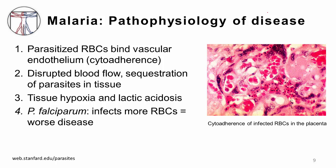We'll talk a little bit about the pathophysiology of disease — why do people get sick with malaria? These parasitized red blood cells become abnormal, sticky red blood cells, and they'll bind to the vascular endothelium inside blood vessels. This process called cytoadherence happens, and when you get binding of all these red blood cells in the blood vessels, you get disruption of normal blood flow and sequestration of these organisms in tissues such as the brain, the kidney, the lung, leading to cerebral malaria and placental malaria, as you can see in this image. This ultimately leads to tissue hypoxia and lactic acidosis. Plasmodium falciparum can be more severe because it tends to affect more red blood cells at different stages, so you get more of this cytoadherence and sequestration than you would with other species.